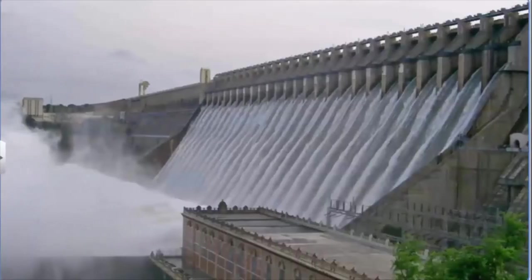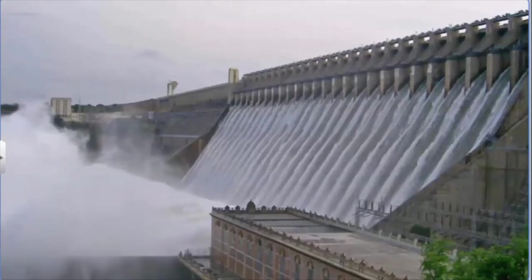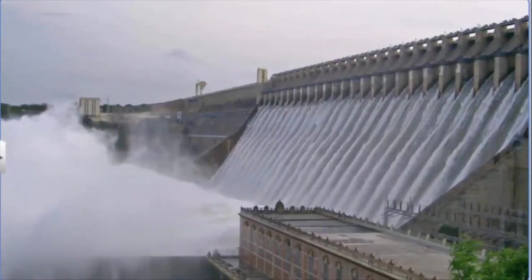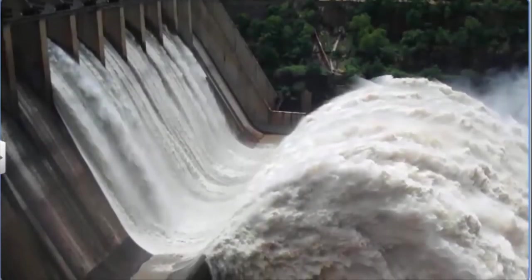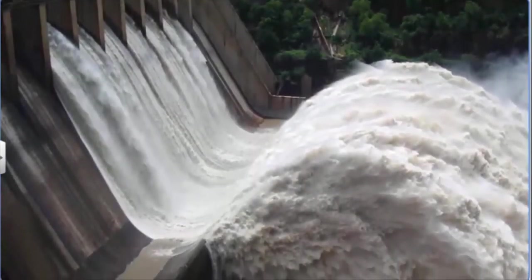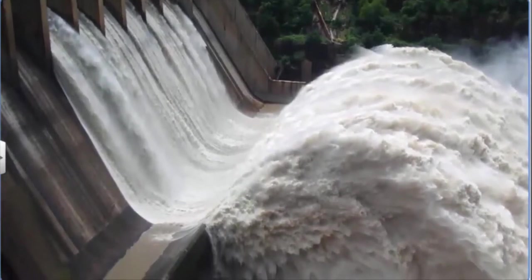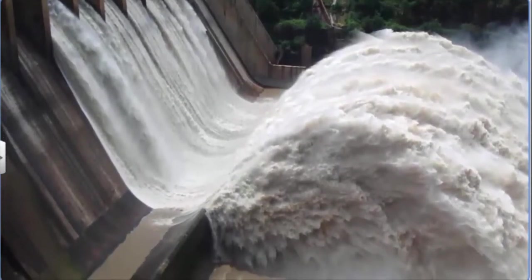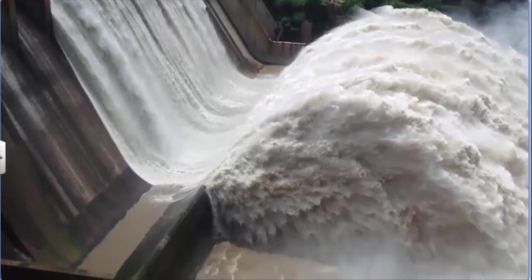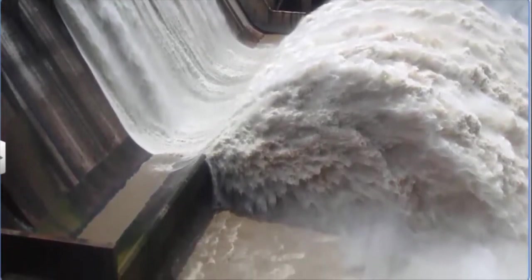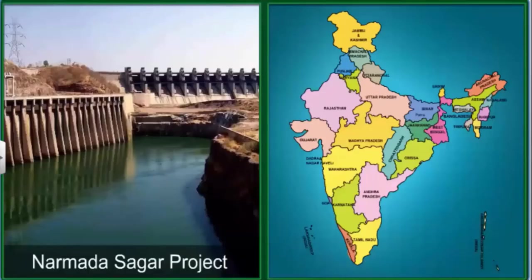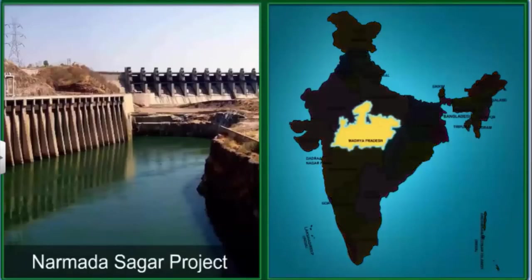Large infrastructure projects have also resulted in massive deforestation. Over 5,000 square kilometers of forests have been cleared since 1951 for multipurpose river projects. The Narmada Sagar project in Madhya Pradesh alone will submerge 40,000 hectares of natural forests.